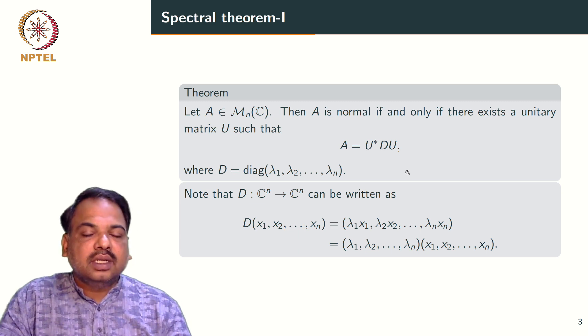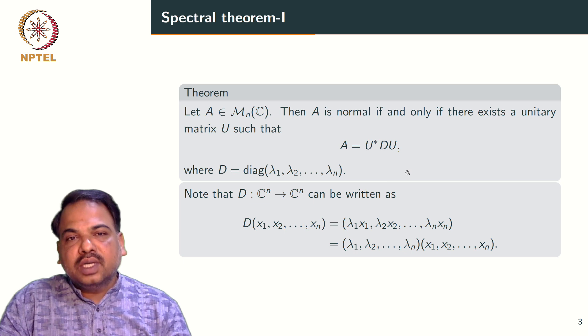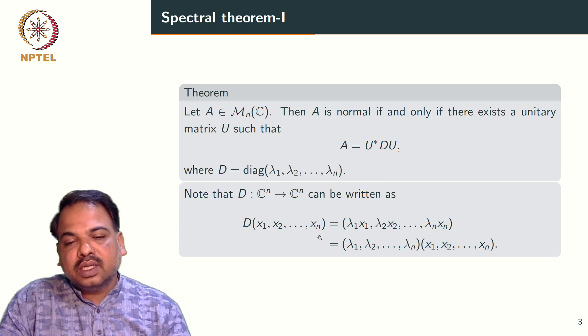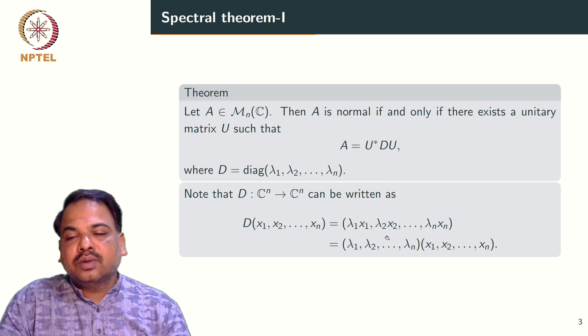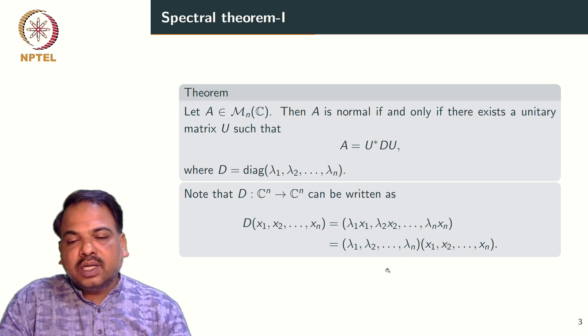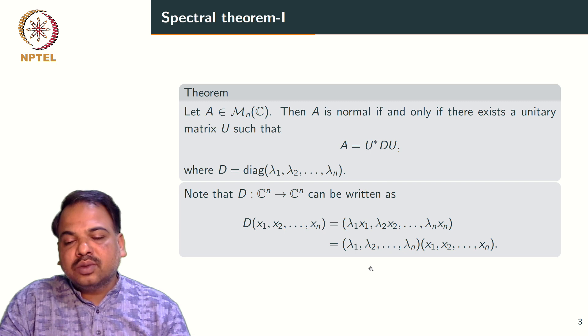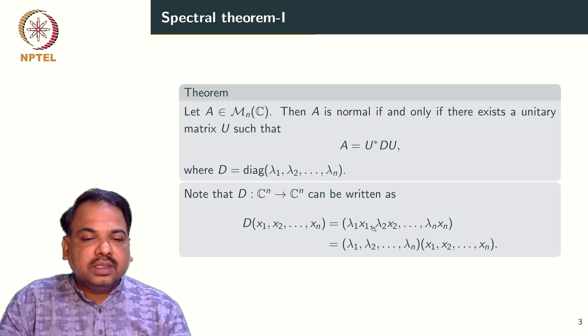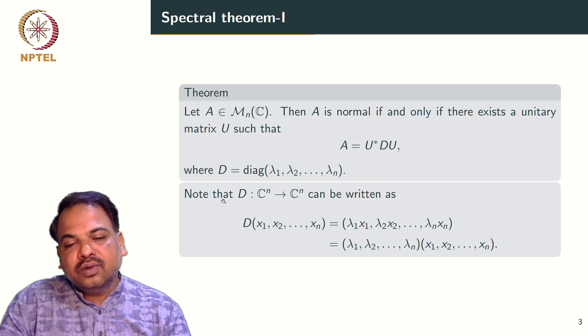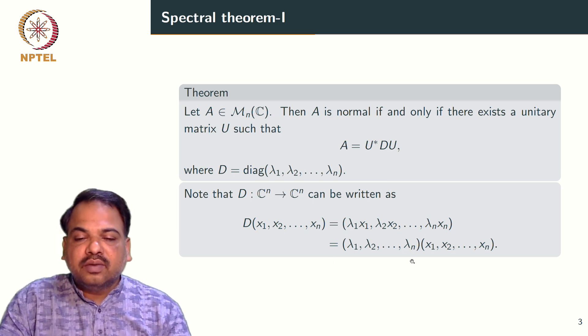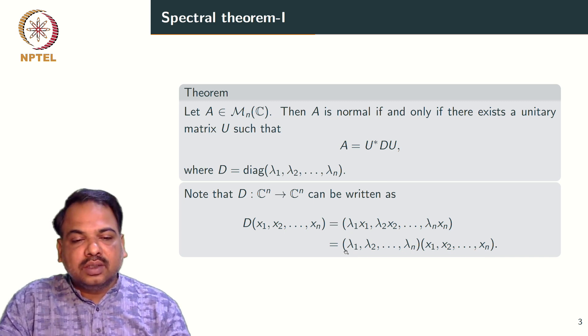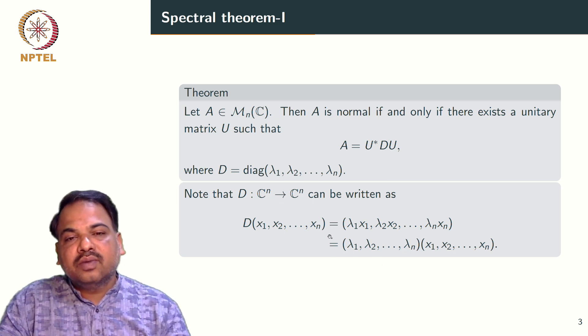Since D is an n by n matrix, it can be viewed as a linear transformation from C^n to C^n. It can be written as D of (x1, x2, ..., xn) equals (lambda 1 x1, lambda 2 x2, ..., lambda n xn). And this can be written as pointwise product of these two vectors, (lambda 1, lambda 2, ..., lambda n) multiplied by (x1, x2, ..., xn). That means the diagonal matrix D or diagonal operator D, we can view it as a multiplication operator with a fixed vector (lambda 1, lambda 2, ..., lambda n). This representation of D is going to be very useful when we want to extend this result to the infinite dimensional setting.